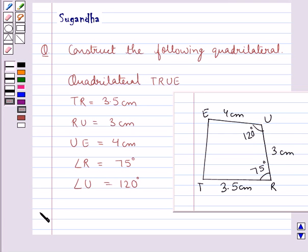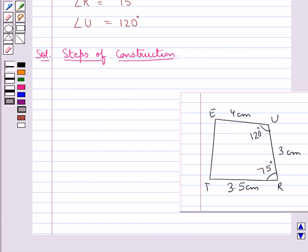Now let's move on to the solution. Now we will construct the quadrilateral step by step. Visualizing the rough sketch of the quadrilateral, we can easily make out that our first step of construction would be